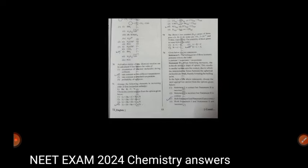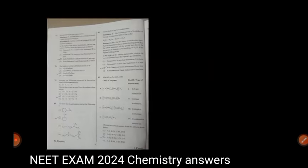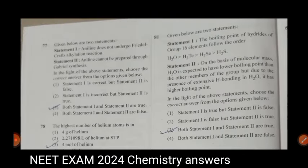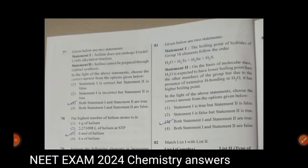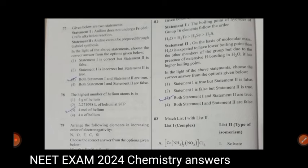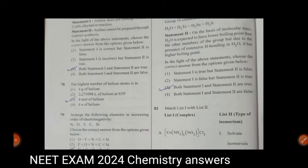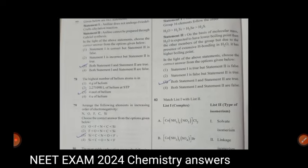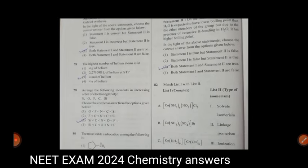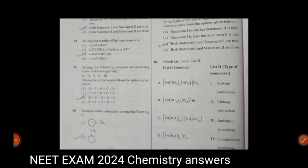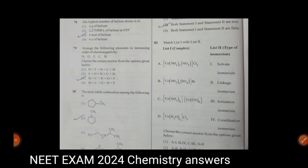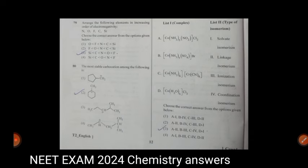Now we will move to the 77th question. Given below are two statements. Here both statements one and statement two are true. The highest number of helium atoms is in four mole of helium. Answer is third one. Question 79, arrange the following elements in increasing order of electronegativity. Answer is third one. Question 80, the most stable carbocation among the following is answer second one.